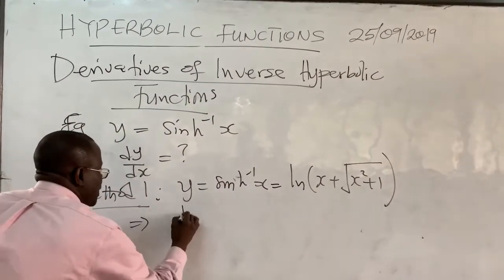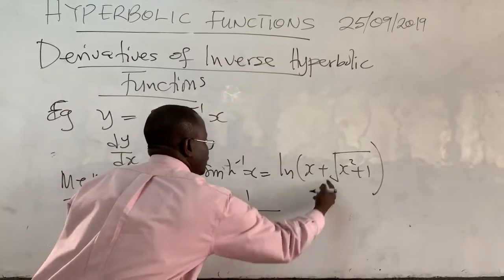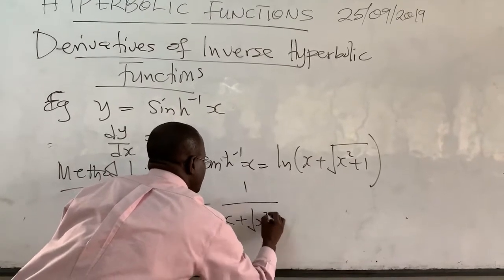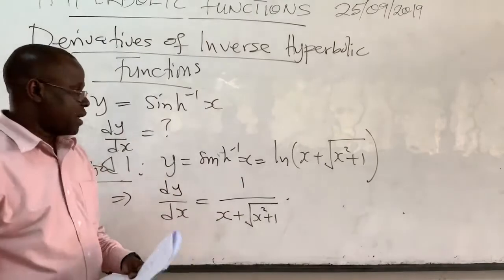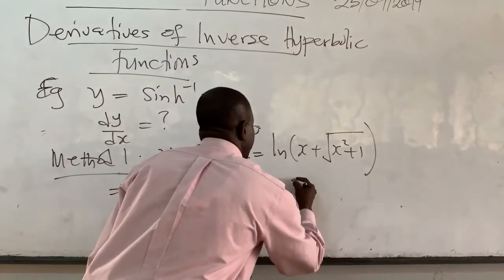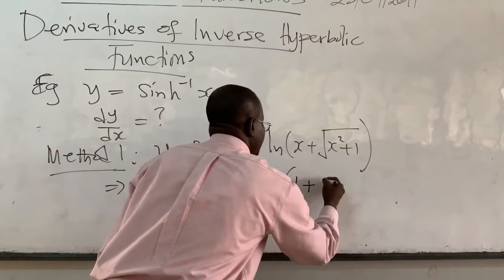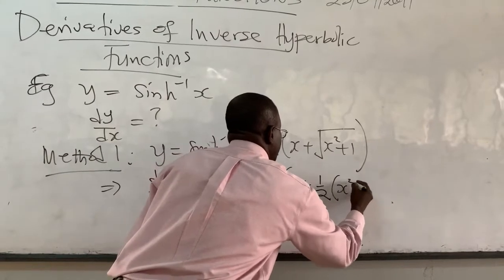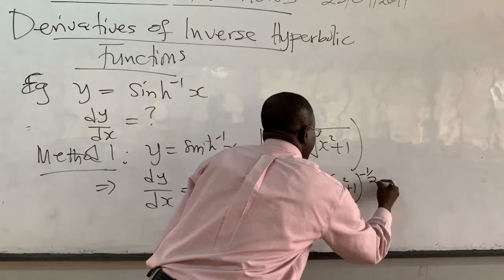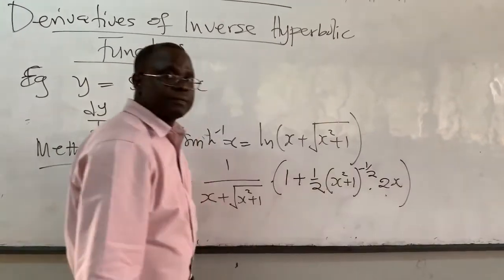From here, dy/dx will be equal to 1 over what is in here — the argument — which is the square root of x² + 1, multiplied by the derivative of what is inside. The derivative of the inside: the derivative of x is 1, plus one half times (x² + 1) to the power negative one half, times the derivative of x² + 1, which is 2x.